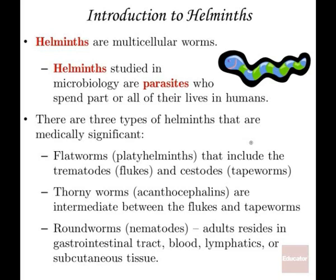There are three kinds of helminths that are medically significant. One type are the flatworms — they can be the trematodes, these flukes, or the tapeworms, and we're going to have a more detailed discussion about the tapeworms. The thorny worms are intermediate, and then the roundworms are exactly how they sound — they're round, and these are worms that reside in the gastrointestinal tract. They can also reside in the blood, in the lymphatics, and the subcutaneous tissue. The second example we're going to discuss is actually a roundworm example.